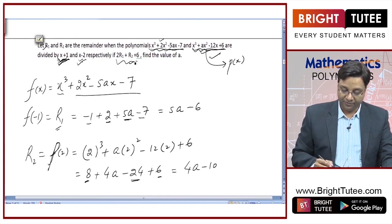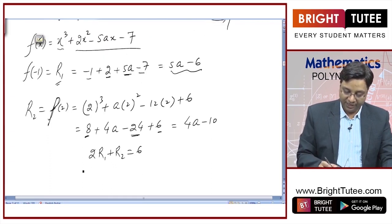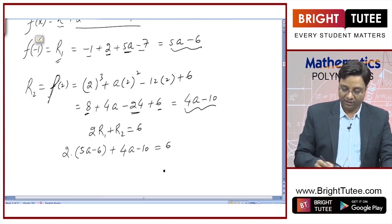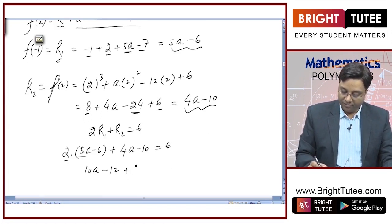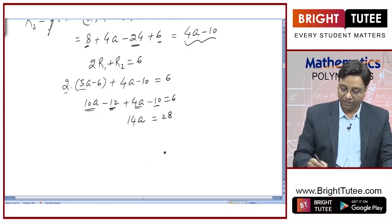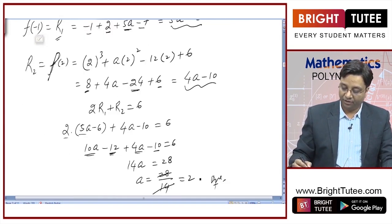Now I will place values of R1 and R2 into the given equation: 2R1 + R2 = 6. R1 is 5a − 6, so 2(5a − 6) + (4a − 10) = 6. This gives 10a − 12 + 4a − 10 = 6, so 14a − 22 = 6, hence 14a = 28. Therefore a = 2.